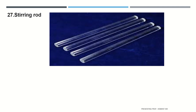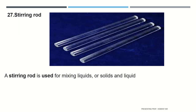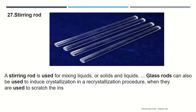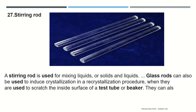A stirring rod is used for mixing liquids, or solids and liquids. Glass rods can also be used to reduce crystallization in a recrystallization procedure when used to scratch the inside surface of a test tube or beaker. They can also break up an emulsion during an extraction.